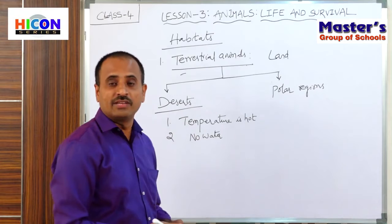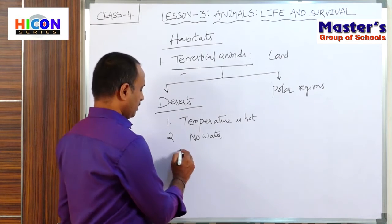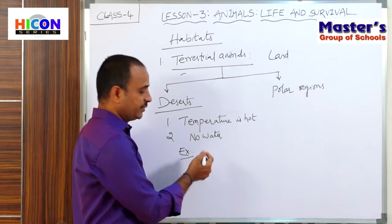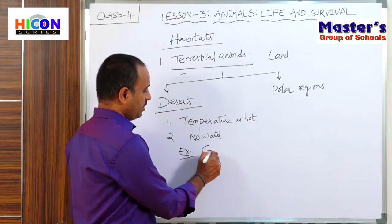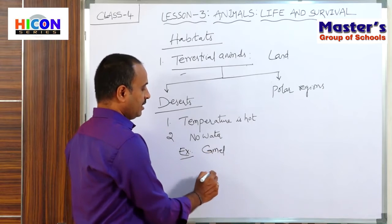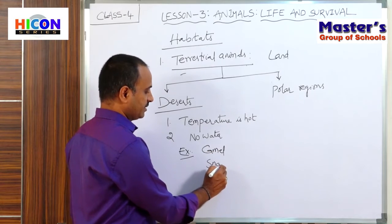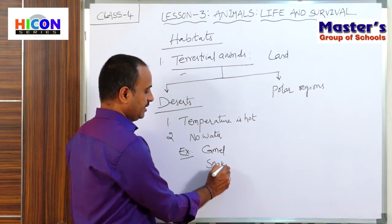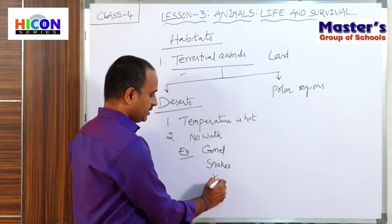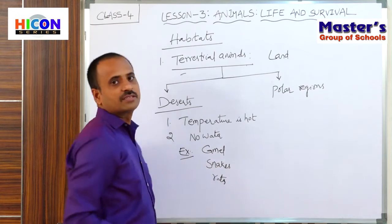So what are the animals which live in deserts? For example, camel, and some snakes — desert snakes — and some frogs. These are some examples of animals which live in deserts.